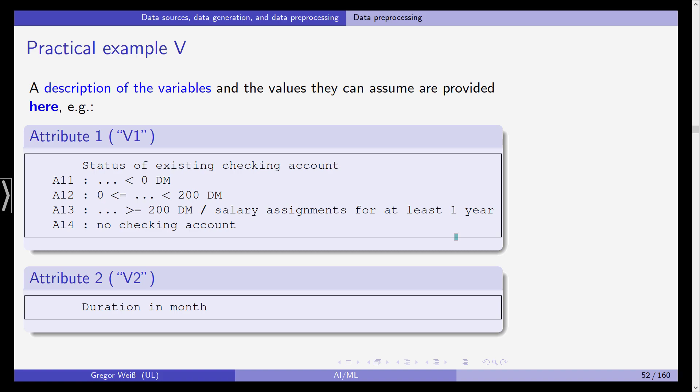You can look at the description at the UCI website. There is a description of the variables. For example, attribute 1, V1, is actually the status of the existing checking account. The four levels are coded as follows: the first level, A11, is that the checking account is below zero. If it's between zero and 200 Deutschmarks, it's level two.